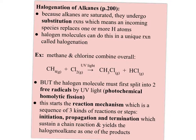Free radicals are highly reactive atoms, so they're going to bond with the first thing they find. Free radicals are thought to be part of the disease mechanism, such as cancer, that we don't quite understand yet. This process is called photochemical homolytic fission — photochemical meaning light is needed to start the reaction, and homolytic means breaking apart two of the same atoms, such as diatomic chlorine. Fission means splitting apart.